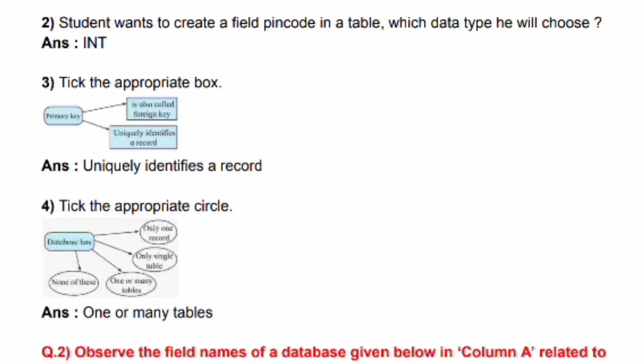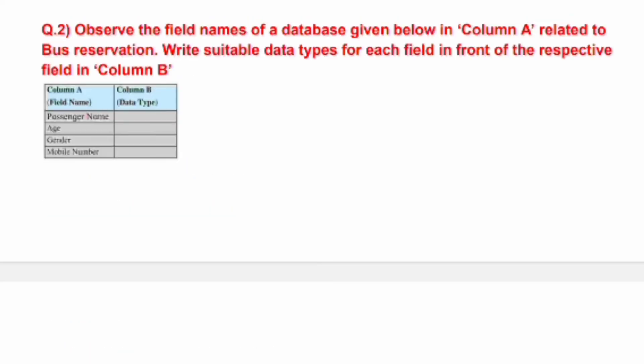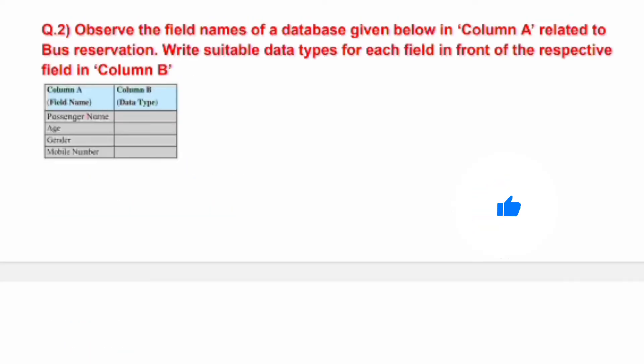Tick the appropriate circle. The answer is one or many tables. Question No. 2: Observe the field names of a database given below in Column A, related to bus reservation. Write suitable data types for each field in front of the respective field in Column B.